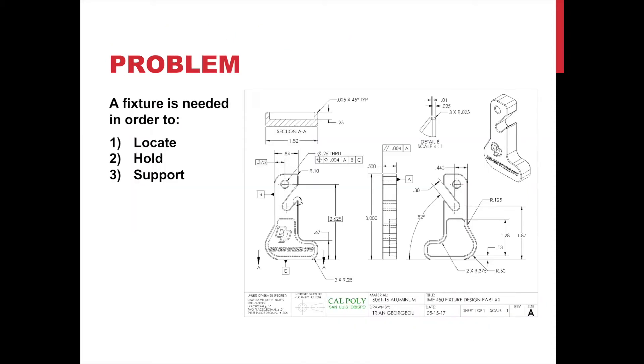Our problem is that a fixture is needed in order to locate, hold and support the parts to be machined. The part must be located with respect to its 6 degrees of freedom as specified by the datums. The fixture needs to provide precise and repeatable locating of the workpiece. The part must not move excessively during machining.